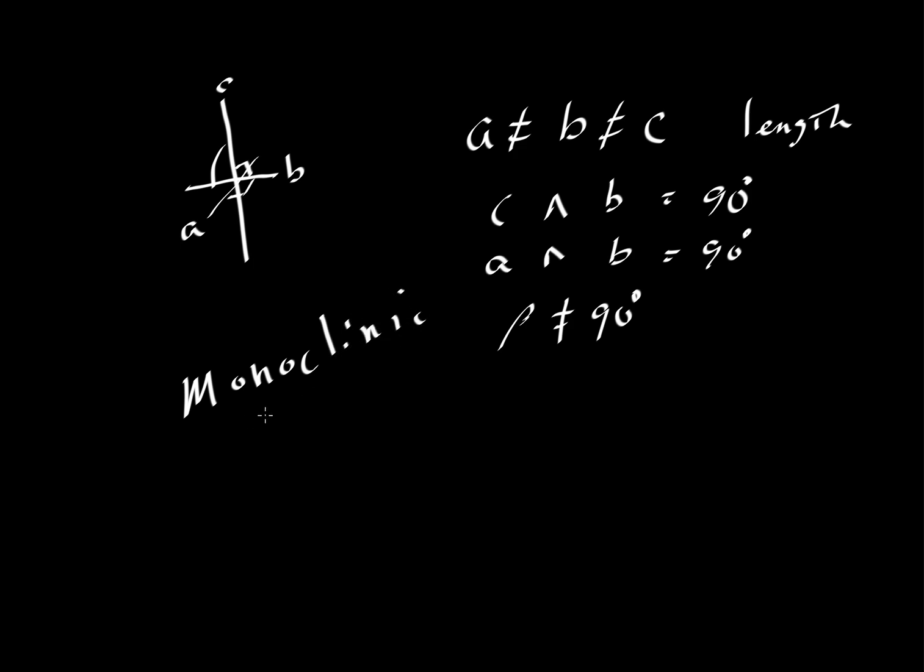And you could break this up into its Greek roots. Mono means one, clinic, that's from klein or incline. So there is a single axis, in this case the A axis, that is inclined. And that is the only fellow that's inclined here. All the B and C are perpendicular to one another, and so is A and B. And then none of them are equal in length.